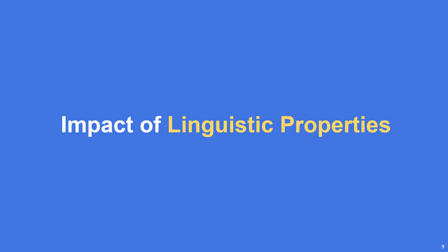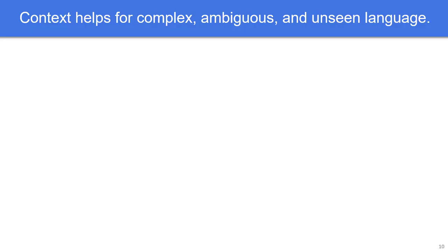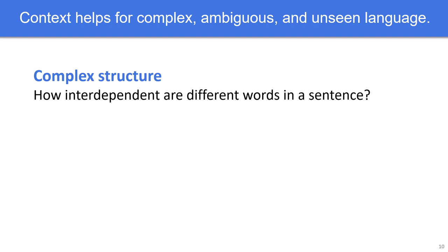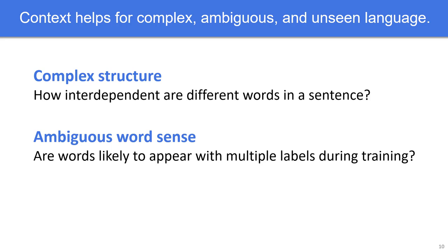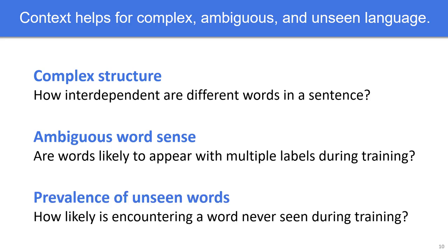We next investigate how the performance boost from using contextual embeddings depends on the linguistic properties of the task at hand. At a high level, we show that contextual embeddings add more value on complex, ambiguous, and unseen language. We consider language to be structurally complex when the different words in the sentence are very interdependent. We consider language to be ambiguous when the words are used in many different ways in the training data, and we consider language to have a high prevalence of unseen words when the test set contains many words that were not seen or seen very few times during training.